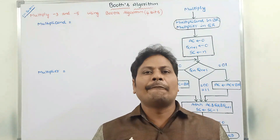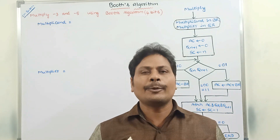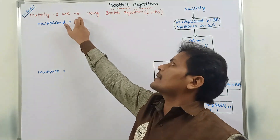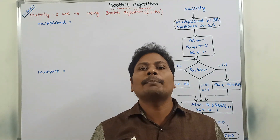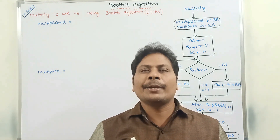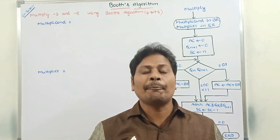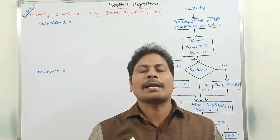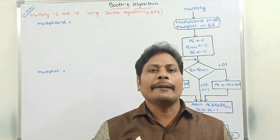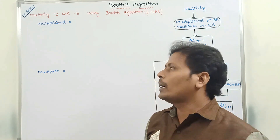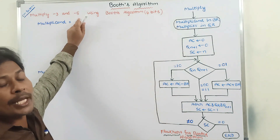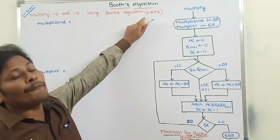Hi friends, welcome back to our YouTube channel. Today we have to discuss multiplying minus 3 and minus 5 using Booth's algorithm in computer organization and architecture. In this video, how to multiply minus 3 and minus 5 using Booth's algorithm in terms of 4 bits.